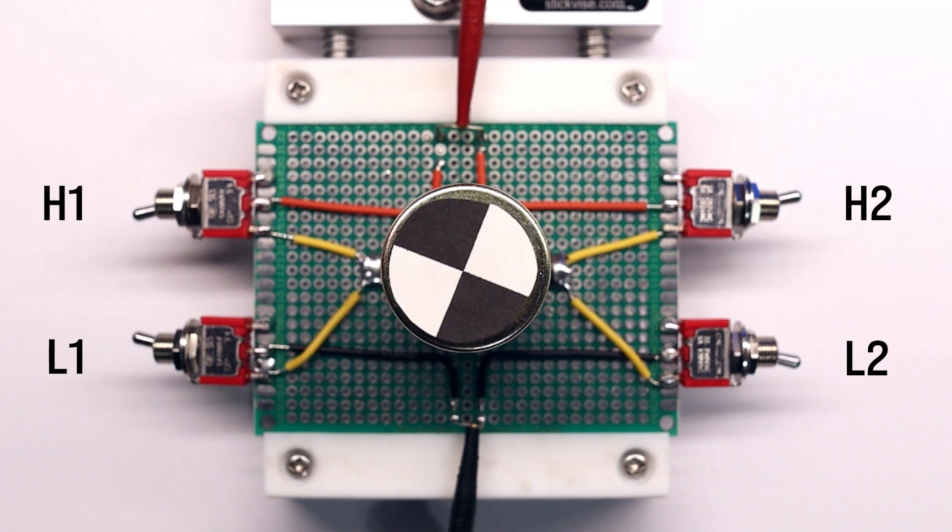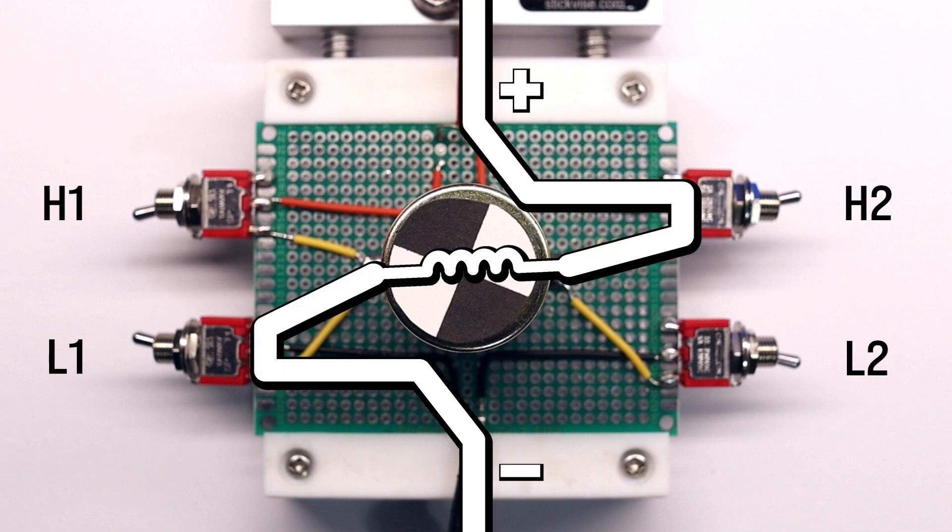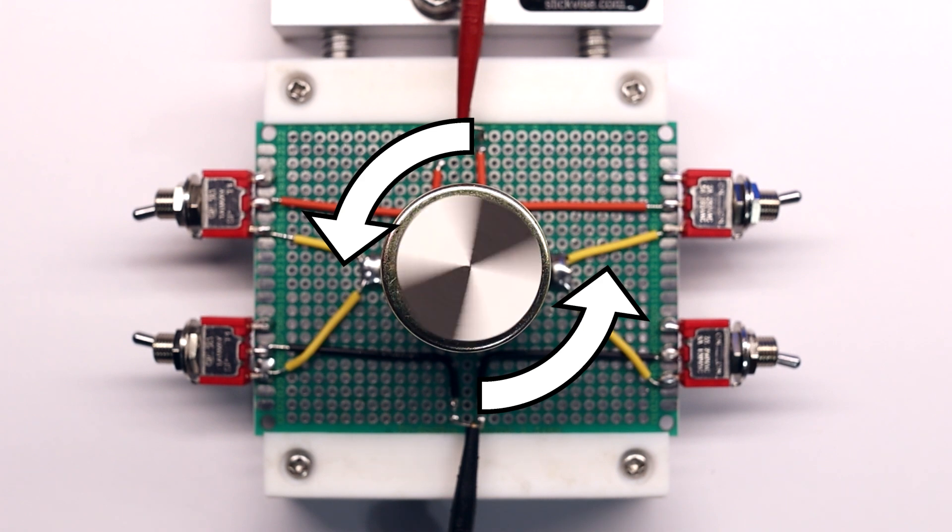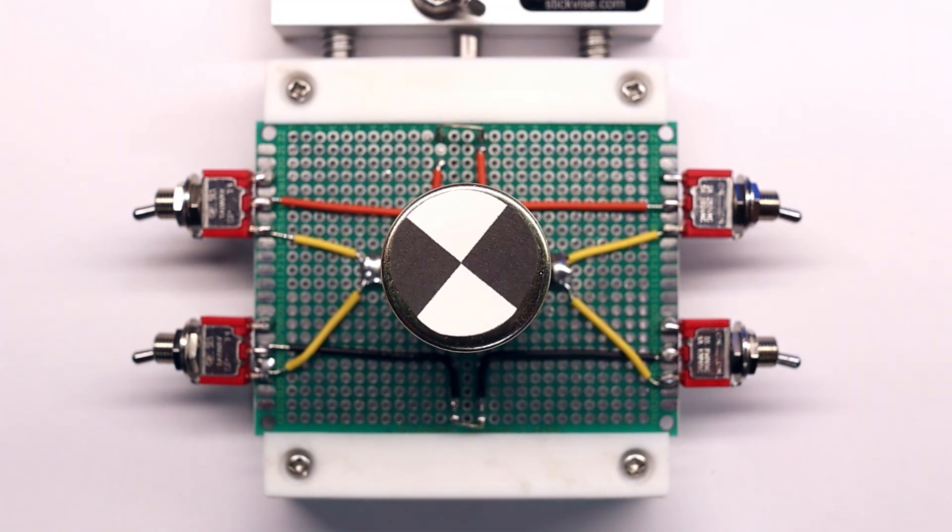Now if I turn off H1 and L2 and turn on H2 and L1, I create a path for current from the positive supply through the negative terminal of the motor this time, then out to the negative supply rail. This is counterclockwise rotation. Of course if I open all switches, the motor is allowed to coast until it eventually stops, you know, due to that pesky friction thing.